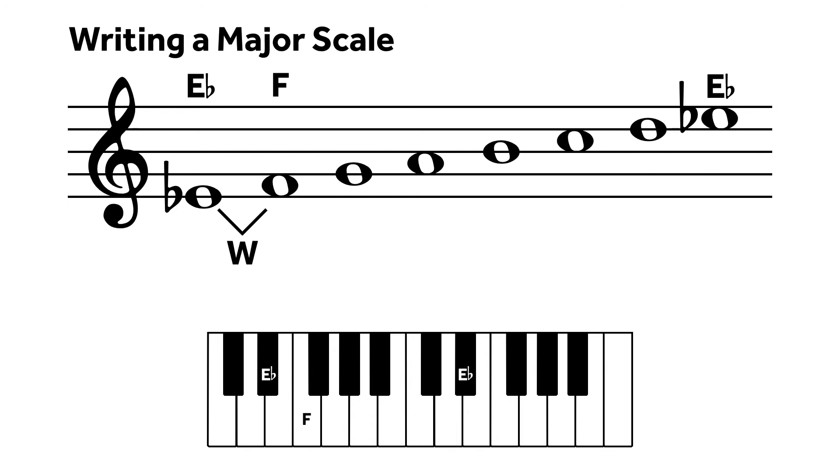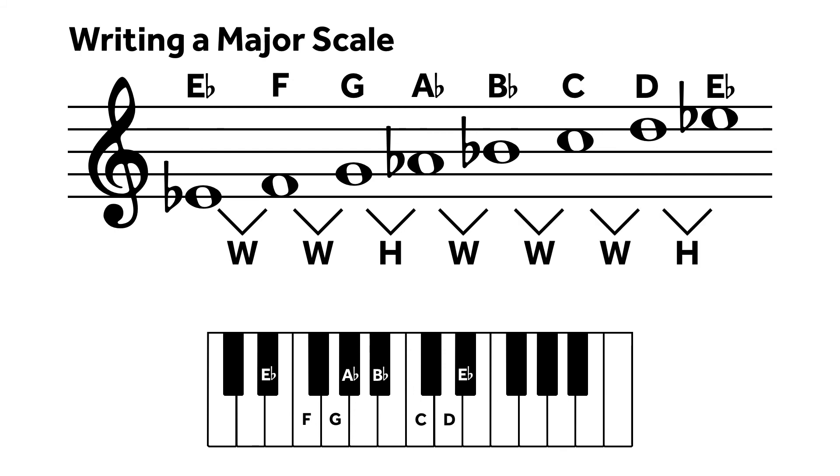F to G is also a whole step already. G to A is a whole step, but needs to be a half step. Because G has already been used, we need to add an accidental to A. Applying a flat turns the whole step into a half step. Continuing with the pattern, we see that A-flat to B is not a whole step. Applying a flat to the B corrects the problem. B-flat to C and C to D are whole steps, and D to E-flat is a half step, thus matching the pattern and completing the major scale.